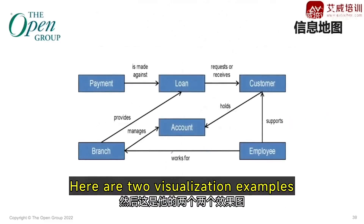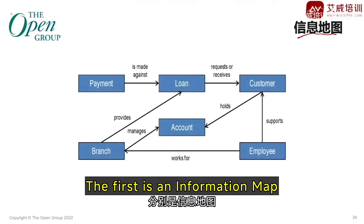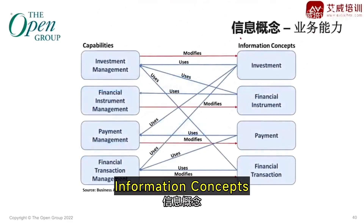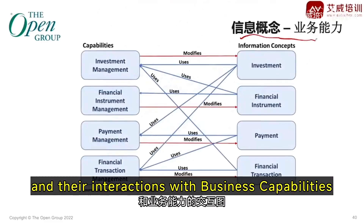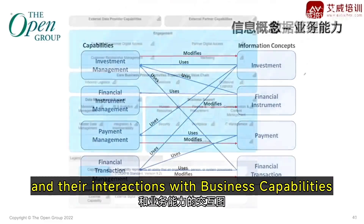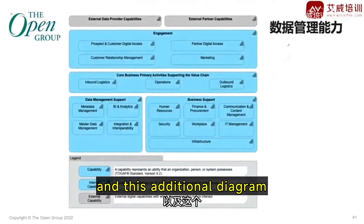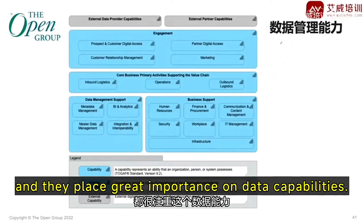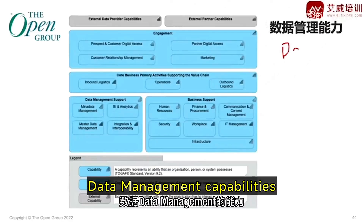Here are two visualization examples. The first is an information map showing information concepts and their interactions with business capabilities, and this additional diagram. Today, everyone recognizes the need for digital transformation, and they place great importance on data capabilities — data management capabilities.